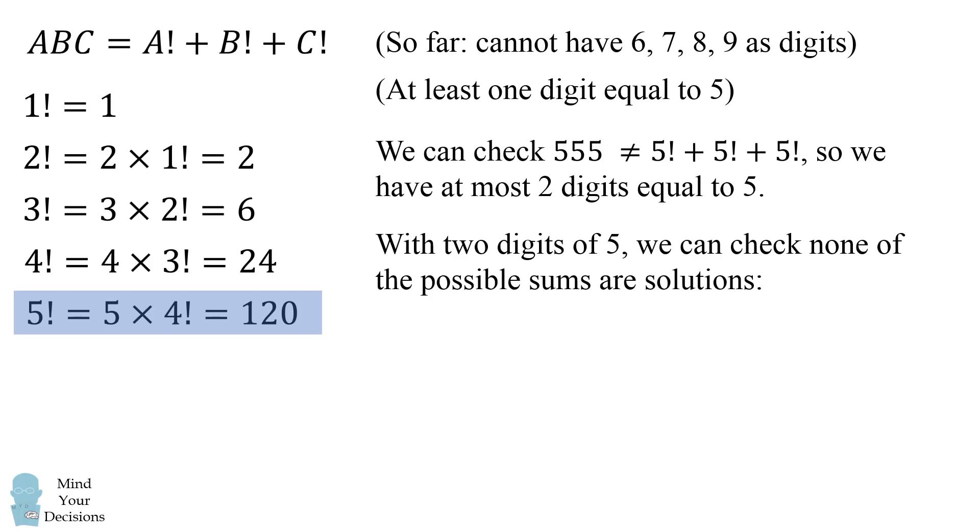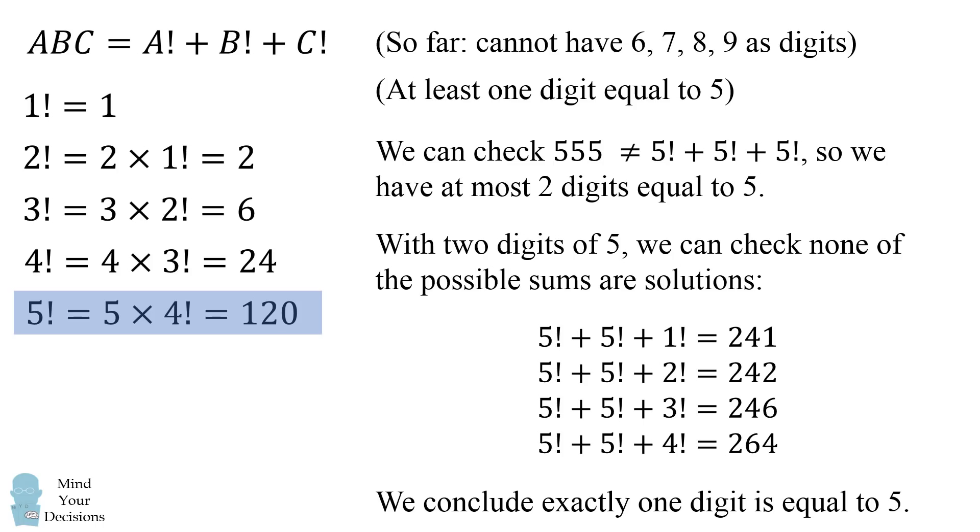With two digits equal to five we can then check the possible sums and see that none of these produce possible solutions. If we have two digits of five and we check the other digit of one, two, three or four, we don't produce a three digit number that involves two fives. So we conclude exactly one digit is equal to five.